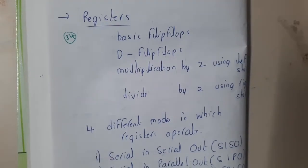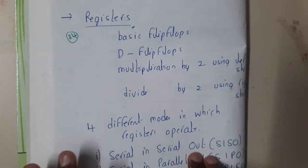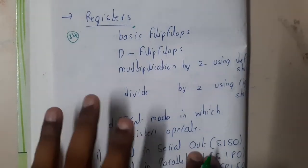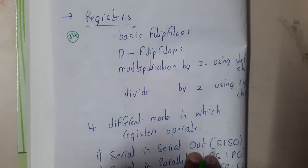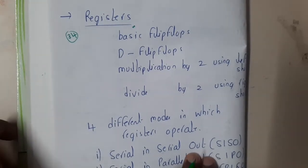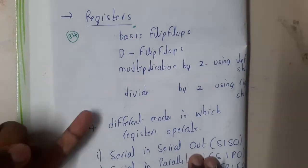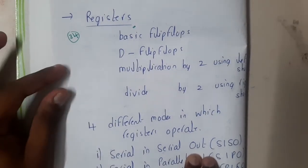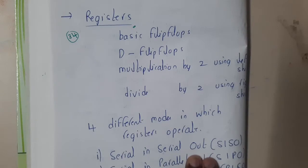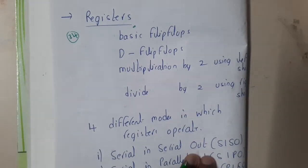Welcome back. In this lecture, let us go through the concept of registers. The first thing to remember is why we need registers. Registers store very minimal information but they are really fast. That is why even in modern computers we have 32, 64, or more registers. They are ultra-fast because the number of bits they store is very low. In some earlier years, registers used to store only one bit.